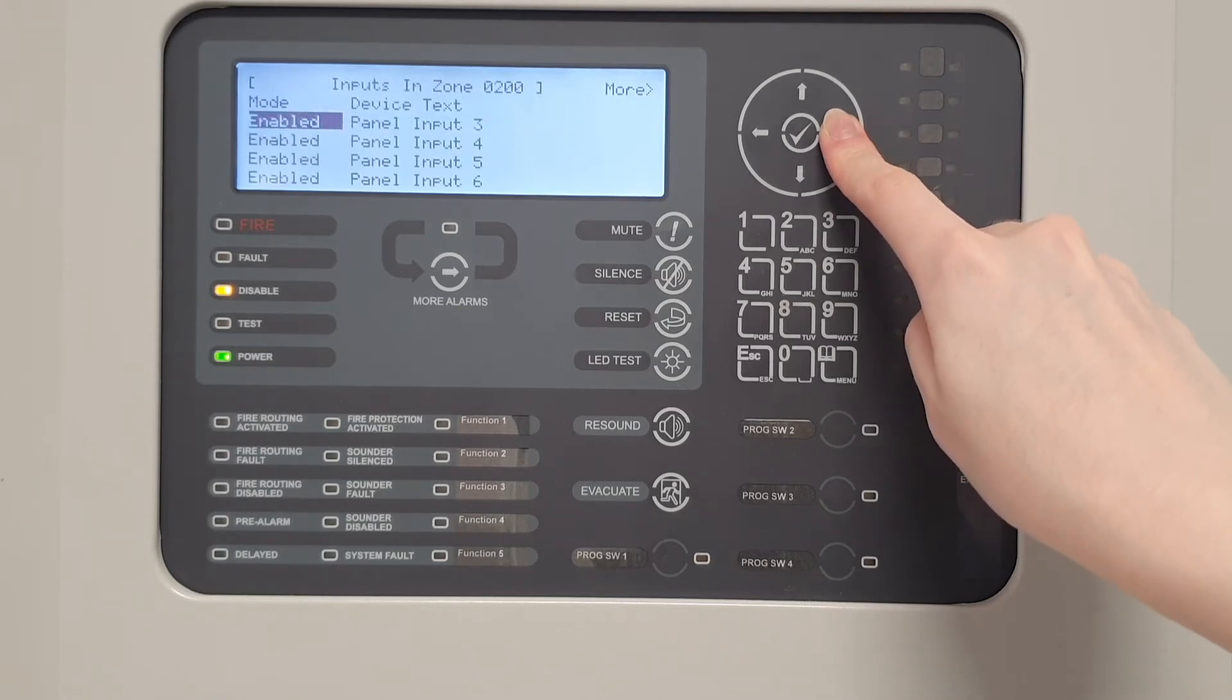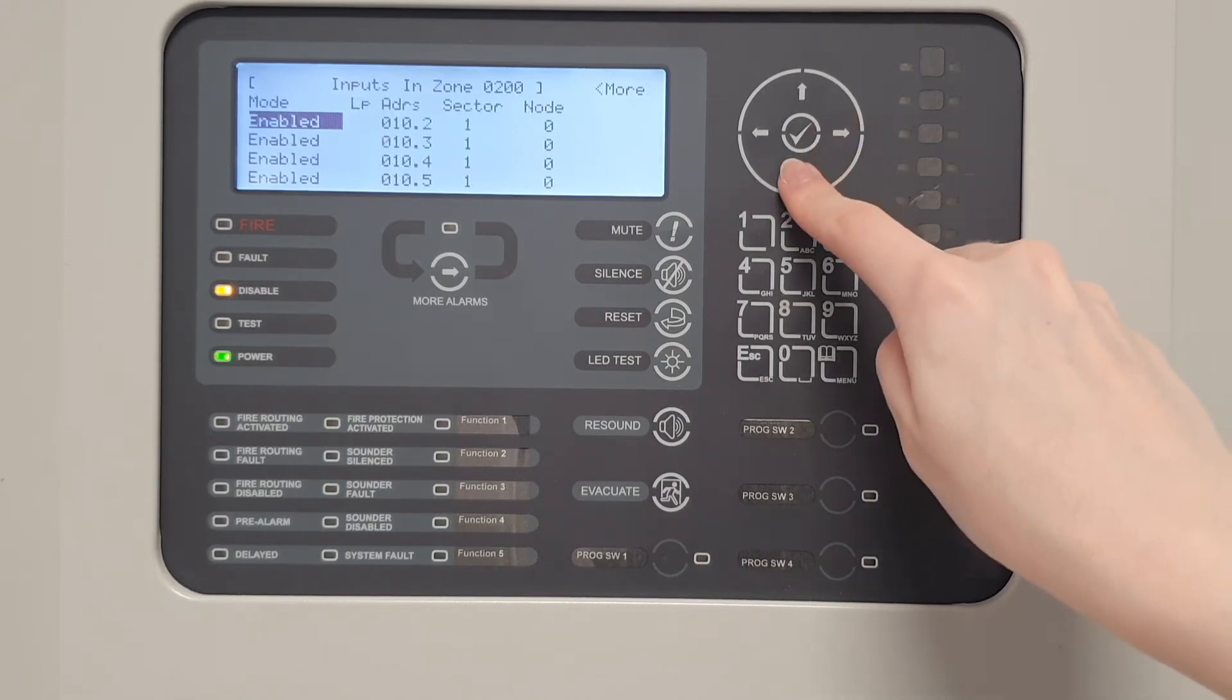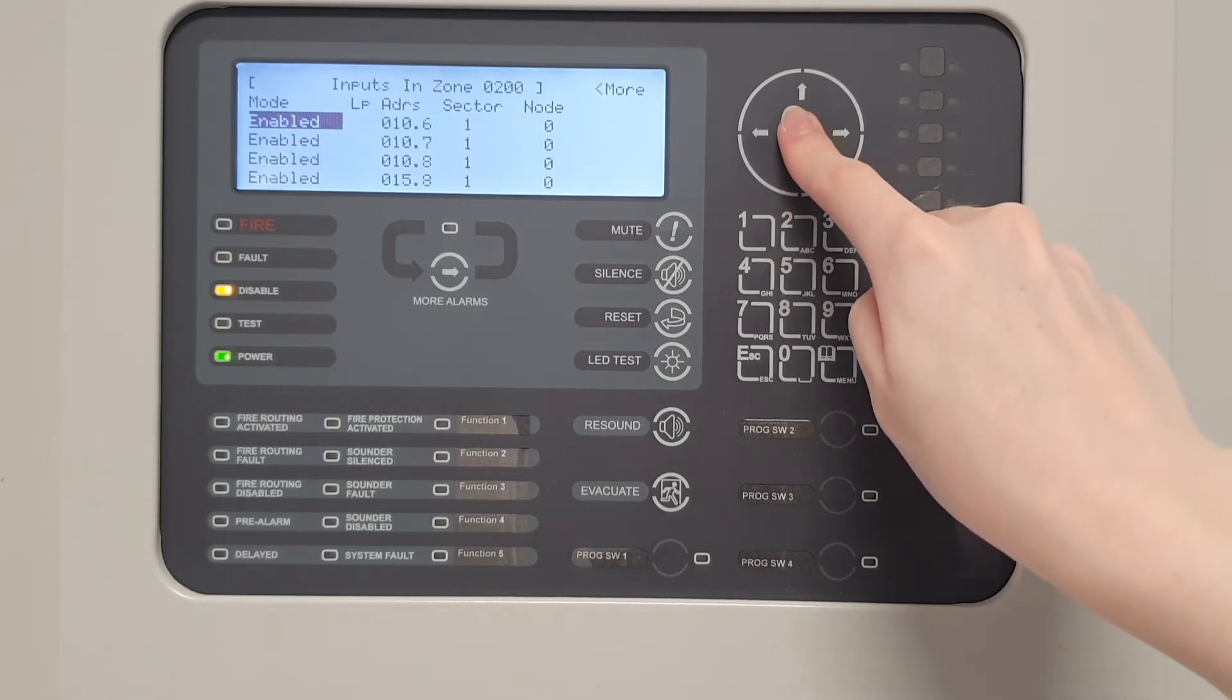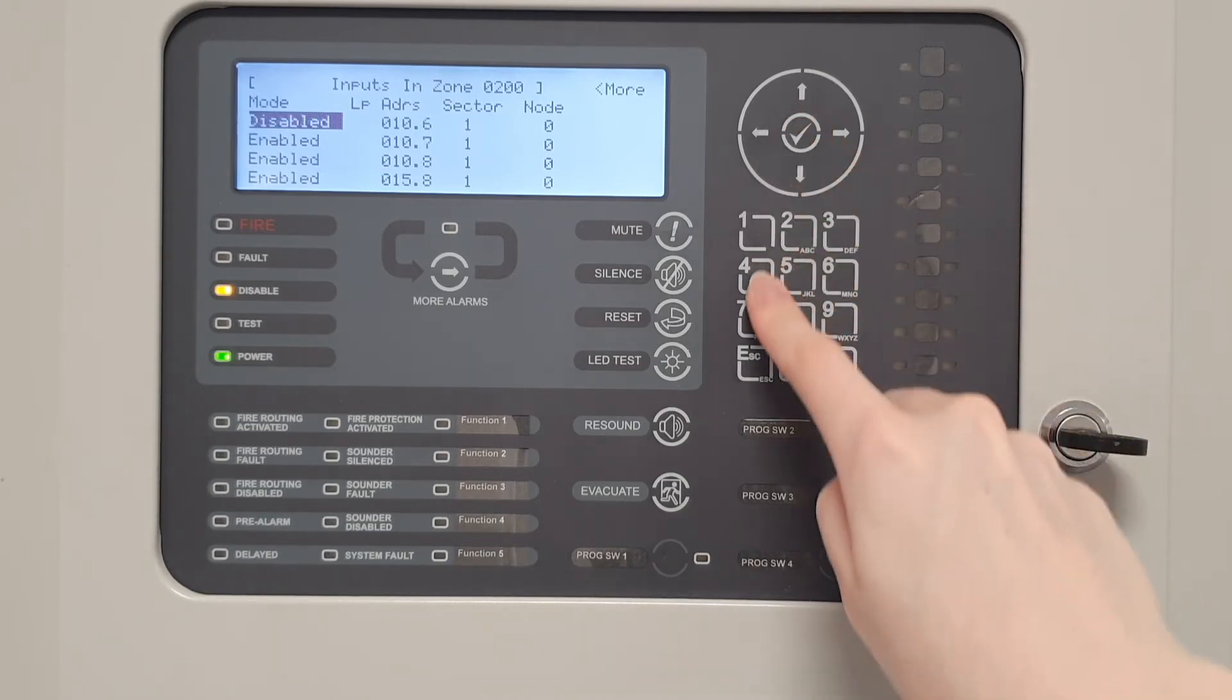The device text, state, type, value and address will be shown. Scrolling down will show more devices in that zone, then press tick to disable the desired device. Pressing escape will take the panel out of this menu.